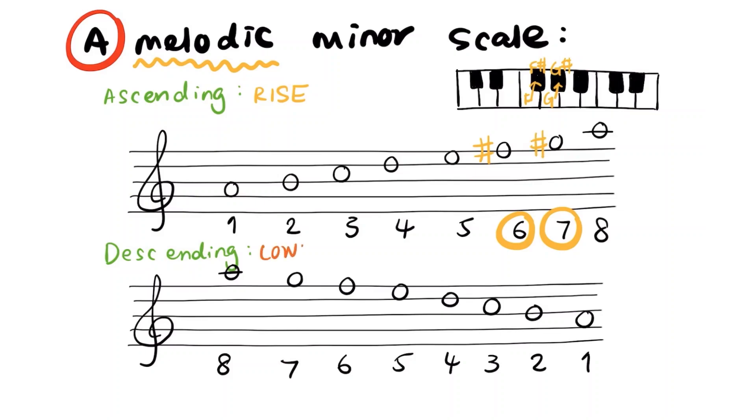After playing ascending, we move backwards, which is descending. This time, we lower the 6th and 7th notes a semitone. We lower these two notes that were raised during ascending. From F sharp, we lower back to F, and from G sharp, we lower back to G. Here you go, an A melodic minor scale.